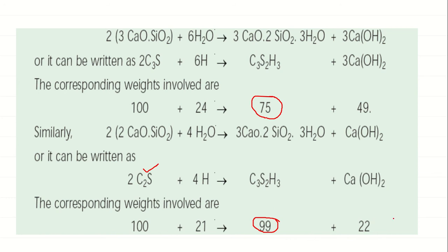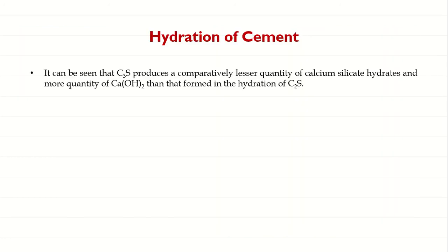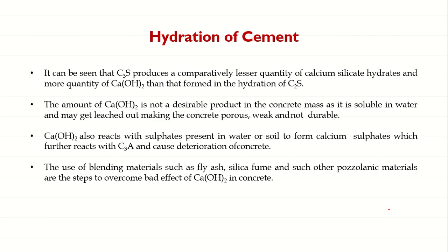C2S also gives less calcium hydroxide. Calcium hydroxide is not actually useful for us — C2S is the one contributing to greater formation of CSH gel. C3S produces lesser quantity of CSH gel but gives out more calcium hydroxide, which is not desirable. Calcium hydroxide is not a desirable product in concrete because when it remains inside the concrete it makes your concrete porous, weak, and not durable.